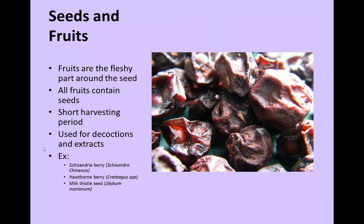Lastly, we have seeds and fruits. Fruits are the fleshy parts around a seed. All fruits contain seeds, but many seeds are not part of fruits as they come on plants. Seeds and fruits would be used for decoctions or extracts. Some examples would be schisandra berry, hawthorn berry, and milk thistle seed.